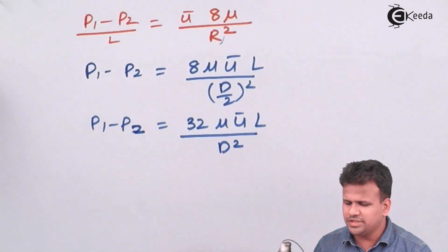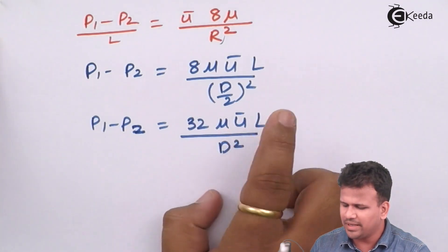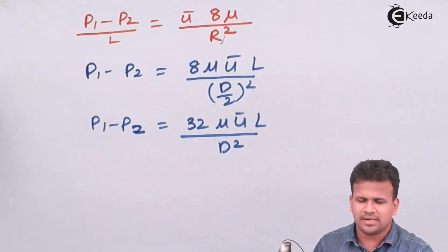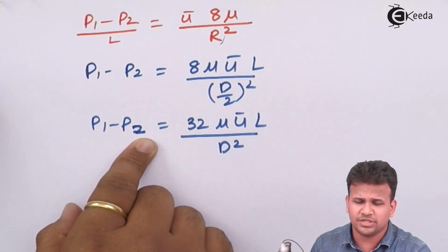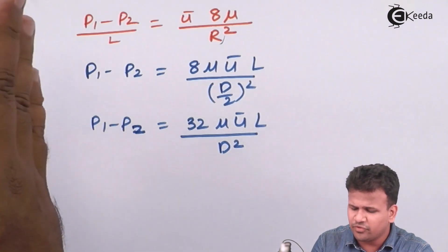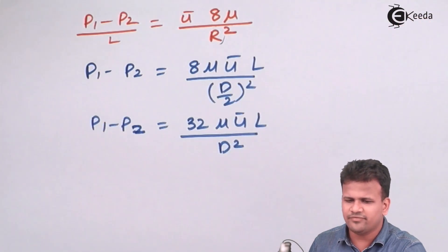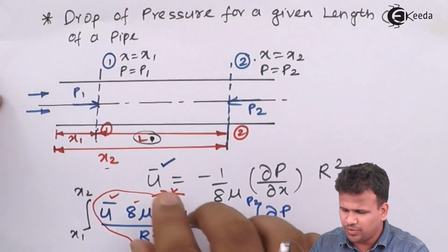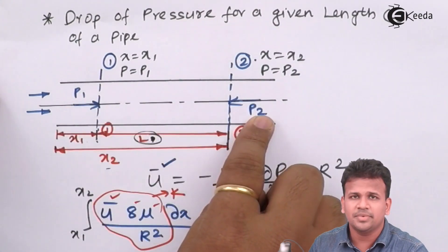So, the pressure drop p1 minus p2 equals 32μ ū L / D². This is the pressure drop over the entire length. The initial pressure must always be greater than the final pressure for the fluid to flow — that is, the fluid flows from section 1-1 to section 2-2 only if pressure p1 is greater than p2.